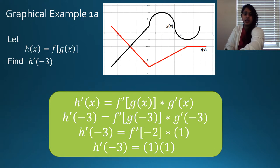I think I have a typo — the derivative at negative 2 is clearly negative, so that should have been negative here.